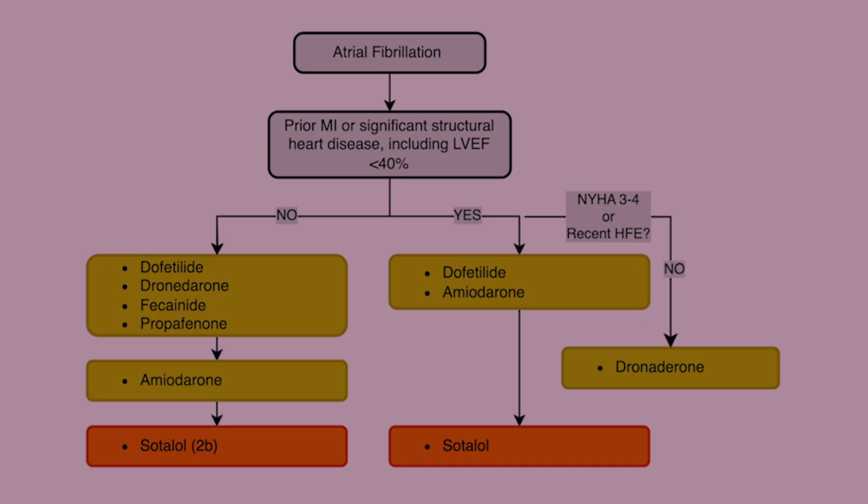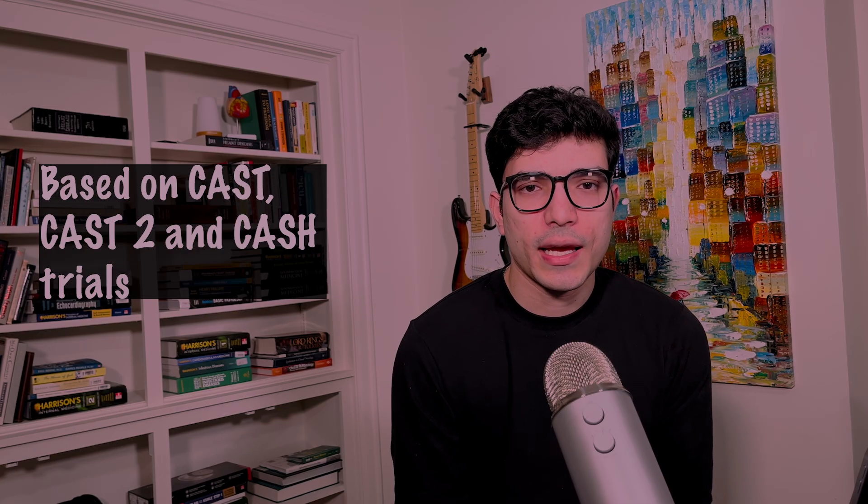Flecainide and propafenone are Class 1C drugs — they have minimal impact on the QT interval, unlike Class 1A and Class 3 drugs. However, they can still be proarrhythmic, causing monomorphic VT or even VF in coronary artery disease patients, hence they are contraindicated in those settings. An AV nodal blocking agent must be on board before using Class 1C drugs — Class 2A recommendation — to prevent conversion to atrial flutter with one-to-one conduction. During infusion, monitor QRS interval; if prolonged more than 25 percent, discontinue the drug.